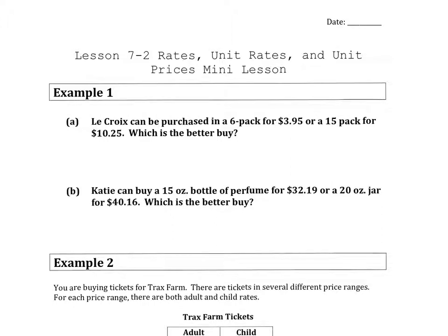In the first example, we're going to determine whether LaCroix purchased in a six-pack for $3.95 or a 15-pack for $10.25 is the better buy. I like to break it up into two parts. I like to say cash is king, and that's just a way for me to remember that money goes on top of whatever the unit is. So I'm going to have $3.95, make sure you label everything. I know myself and any of the other teachers will be very picky about that. So $3.95 for six LaCroix's or a six-pack.